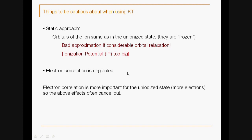Another issue is that electron correlation is neglected. This is usually less of a problem because electron correlation is more important for the unionized state, simply because it has more electrons. These two effects usually cancel out to give some meaningful value for the ionization potential.